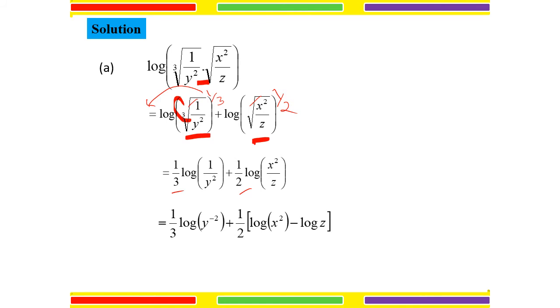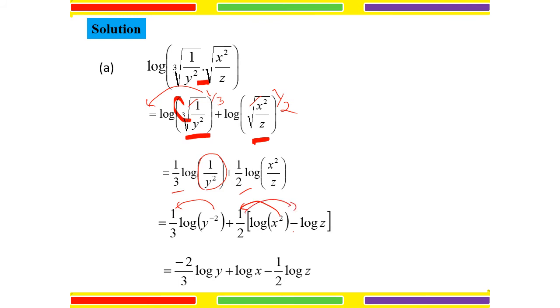Our answer becomes: 1 over 3 times log of Y to the negative 2 — because we want 1 over Y squared, bringing Y to the top gives negative exponent — plus 1 over 2 of log X squared minus log Z, separating X squared and Z using subtraction law. Expanding everything and bringing powers to the front: negative 2 over 3 log Y plus log X times Y, then minus 1 over 2 log Z.